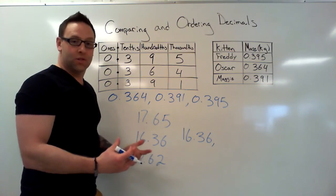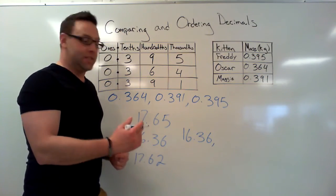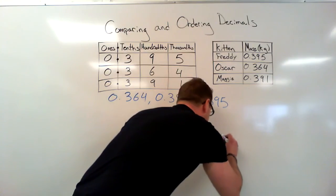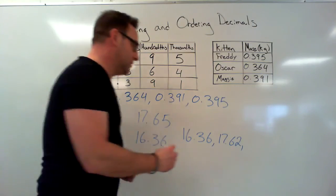Now 17.65. Okay, there you have it, ordered from least to greatest using whole numbers, not just zeros.